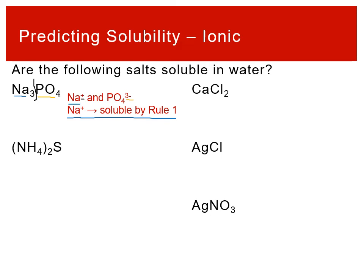For (NH₄)₂S — ammonium sulfide — we want to be careful: those parentheses tell us ammonium (NH₄⁺) is a polyatomic ion. Ammonium is special because it is also part of rule one and is always soluble regardless of what it's paired with. In this case it's paired with sulfide (S²⁻), which would otherwise trigger the 2⁻ insoluble rule, but ammonium is rule one — the most important rule — so this compound is soluble.